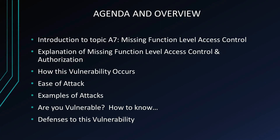Our agenda and overview first. Introduction to Topic A7, which is Missing Function Level Access Control. Explanation of Missing Function Level Access Control and Authorization. How this vulnerability occurs. Ease of the attack. Examples of attacks. Are you vulnerable and how to know. And defenses to this vulnerability.